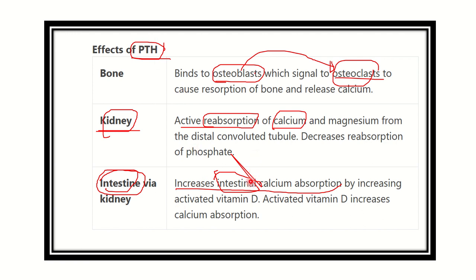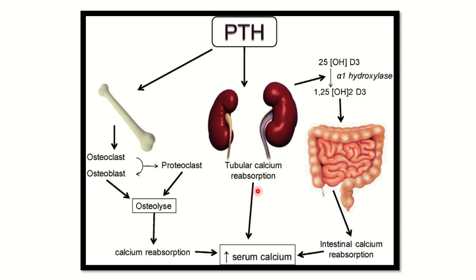This is the best way for parathyroid hormone to increase calcium absorption from the intestine, because it is a dietary source. Looking at the diagram: when parathyroid hormone is activated, it acts first on bone via osteoblast then osteoclast, releasing calcium. Second, parathyroid hormone acts on the renal tubular cells and increases calcium reabsorption, raising serum calcium level.